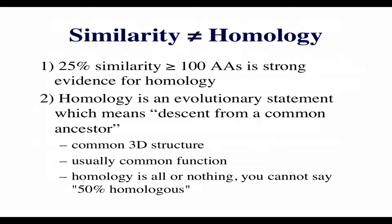However, high percent identity is one piece of evidence that we would use to infer homology. Homology also implies a common three-dimensional structure and usually a common or closely related function. It's all or nothing.